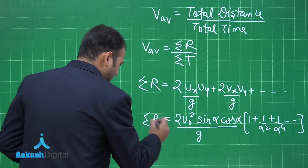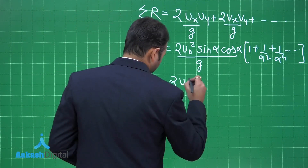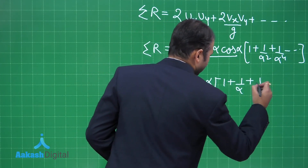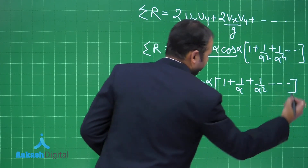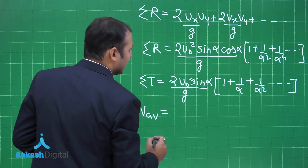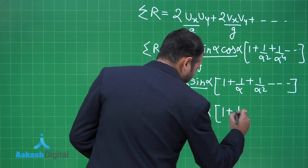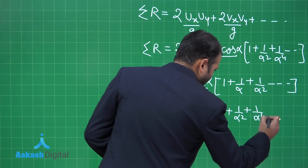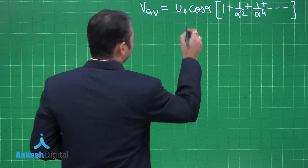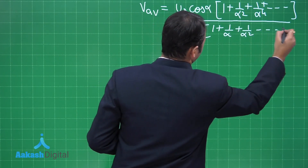Similarly, the summation of all time of flights gives 2u naught sine theta divided by g, multiplied by the series (1 plus 1 over alpha plus 1 over alpha squared, and so on). Taking the ratio of total range to total time, several terms cancel, and the average velocity becomes u naught cos theta multiplied by the series (1 plus 1 over alpha squared plus 1 over alpha to the fourth, ...) divided by (1 plus 1 over alpha plus 1 over alpha squared, ...).